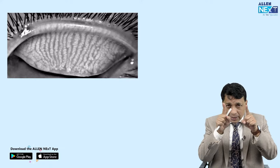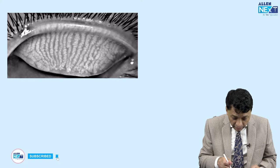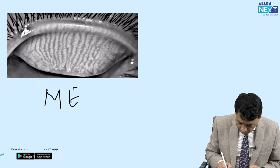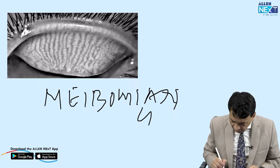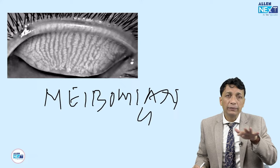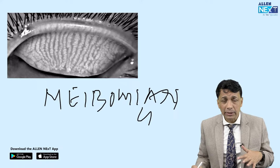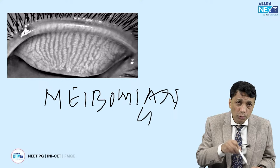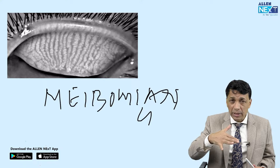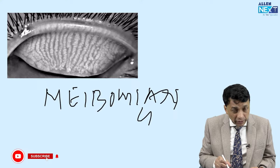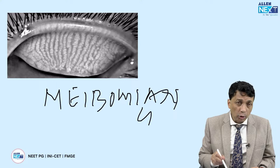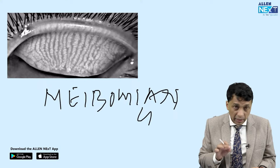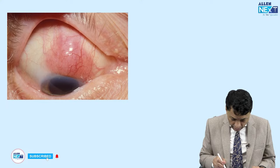Look at these parallel longitudinal coiled snake-like glands on the upper tarsal conjunctiva — these are the Meibomian glands. The Meibomian glands secrete an oily layer called meibum which forms the outermost layer of the tear film, preventing evaporation. They are modified sebaceous glands. This is also relevant to chalazion, which is a chronic inflammatory granuloma of the Meibomian glands.